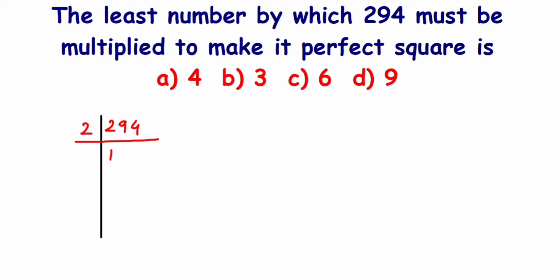2 times 1 is 2, 9 doesn't go. 2 times 4 is 8, 1 is the remainder, that makes it 14. So 2 times 7 is 14.